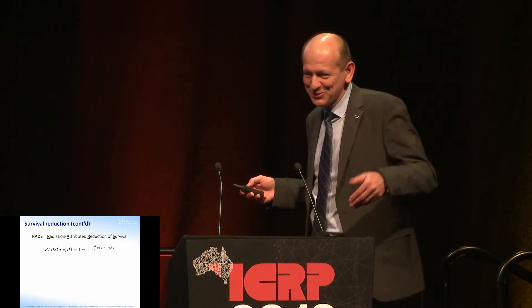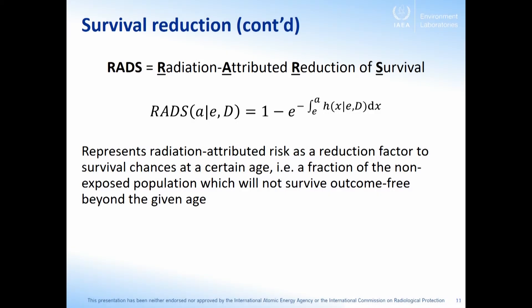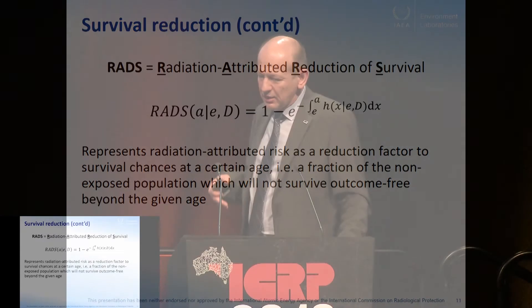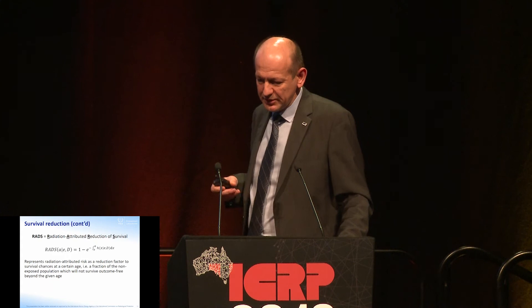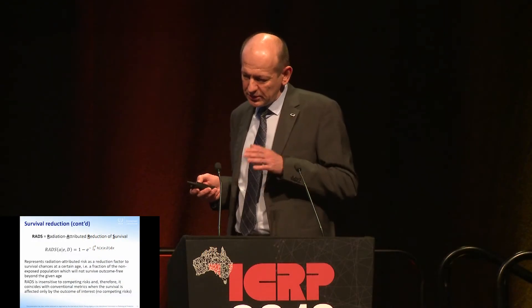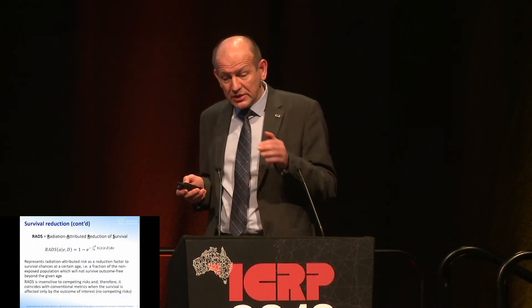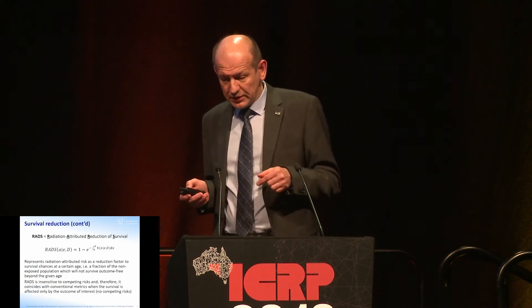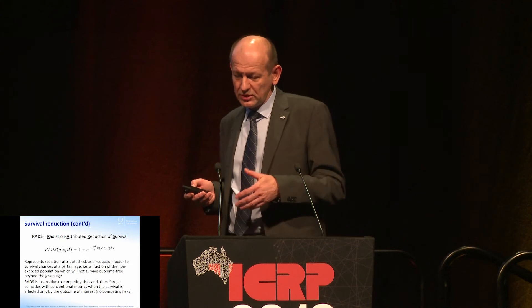RADS is not similar to conventional risk metrics. It represents radiation-attributed risk as a reduction factor to the chances to survive to a certain age — specifically, the fraction of the non-exposed population that would not survive outcome-free beyond the given age. By definition, this quantity is insensitive to competing risks that may exist in the group or population of interest, and therefore it will coincide with conventional metrics only when survival is affected solely by the radiation-attributed outcome of interest — meaning no competing risks in the population.